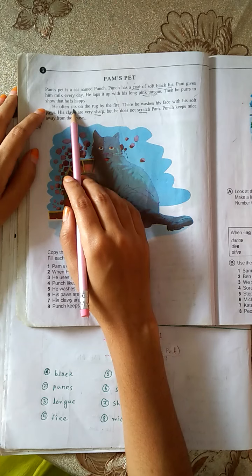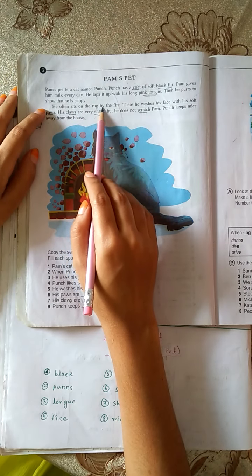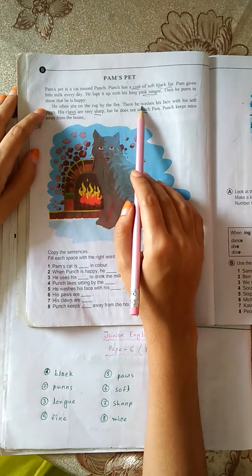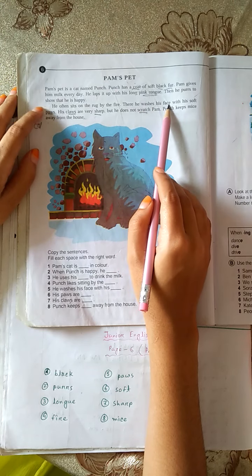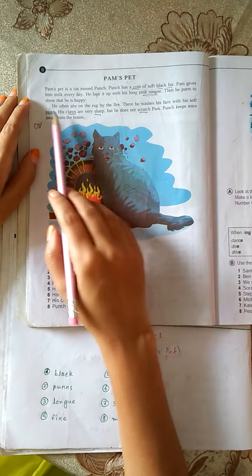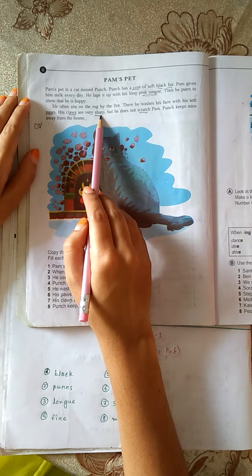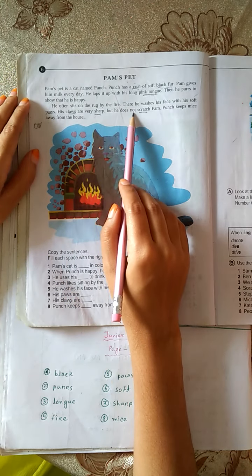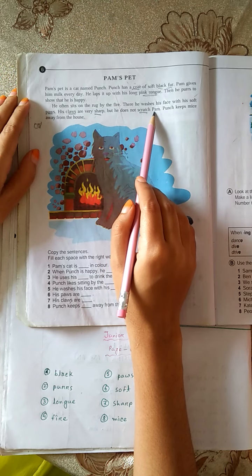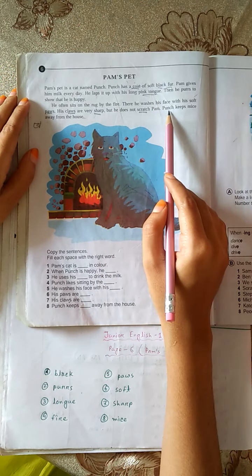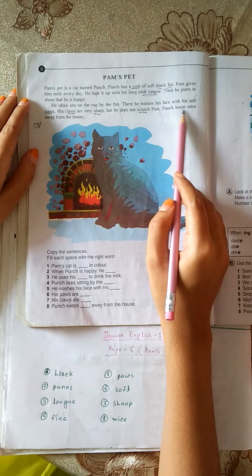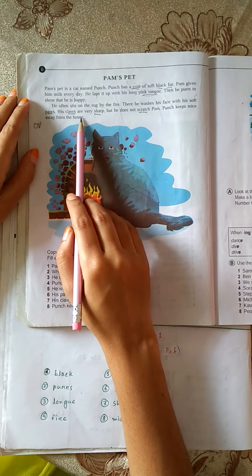He often sits on the rug by the fire. There he washes his face with his soft paws. His claws are very sharp, but he does not scratch Pam. Punch keeps mice away from the house.